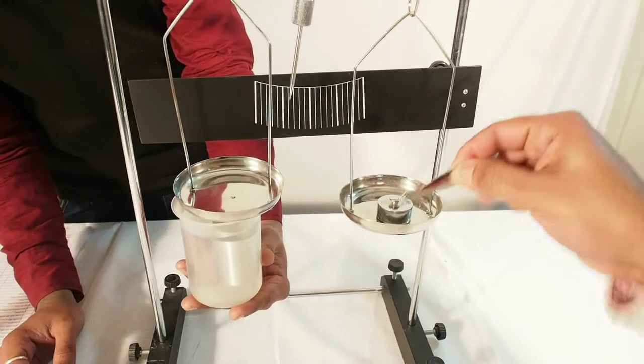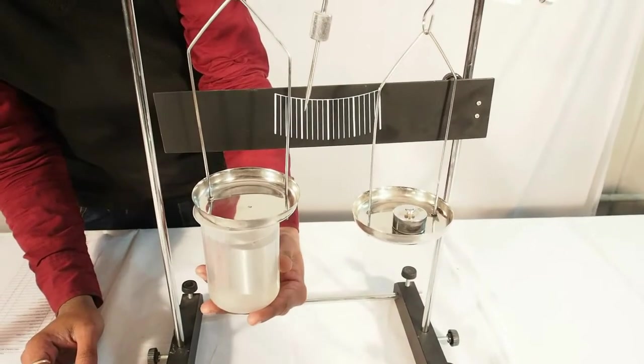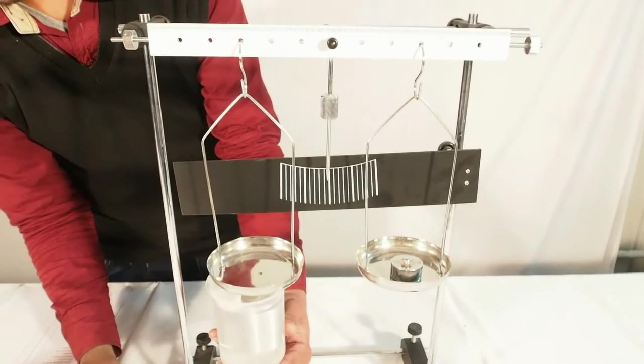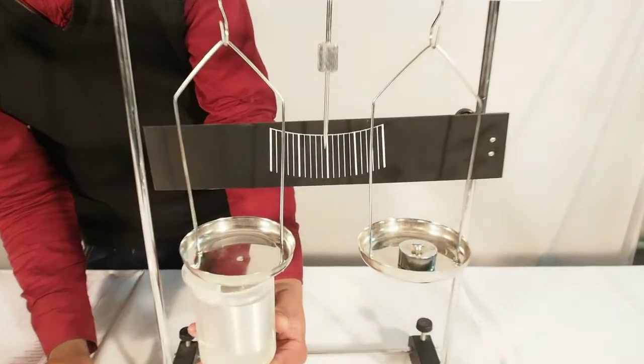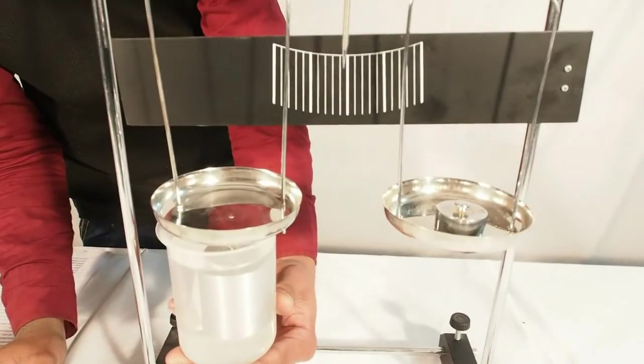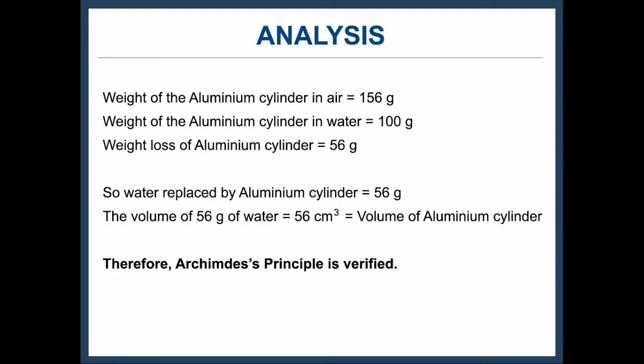The equilibrium condition of the needle pointer will get disturbed. So simultaneously start removing masses from the opposite pan until the equilibrium is restored. Now again note down the reading of weights on the right hand sided pan. It is now 56 grams.